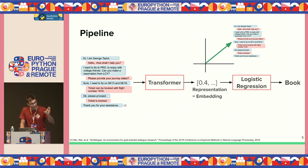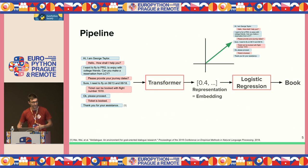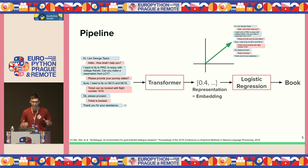I'm deliberately choosing a simple classifier like logistic regression to illustrate that all the interesting things happen within the transformer model, which provides quality representations for classification. Everything we'll be doing from now on is tweaking this transformer model to give us quality representations.